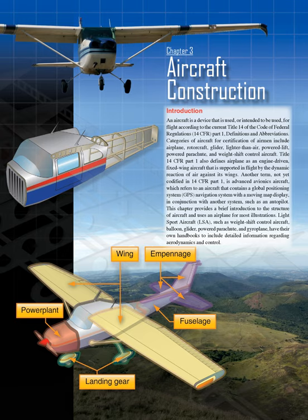Advanced avionics aircraft use GPS in conjunction with another system such as an autopilot. This chapter provides a brief introduction to the structure of aircraft and uses an airplane for most illustrations. Light Sport Aircraft, LSA, such as weight shift control aircraft, balloon, glider, powered parachute, and light airplane, have their own handbooks to include detailed information regarding aerodynamics and control.